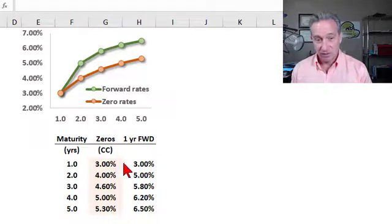Spot rates are also called zero rates, so we can call this a zero rate curve, highlighted in orange here and plotted here in orange, where I've just imagined a spot rate curve that starts at 3% and extends to a five-year spot or zero rate of 5.3%.